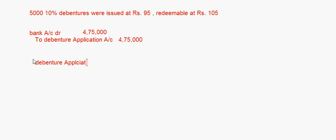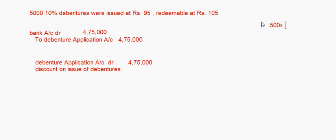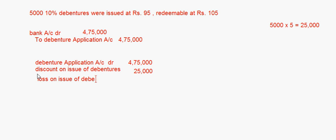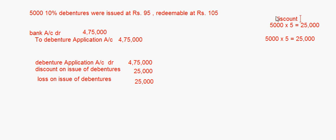Debenture application account debit — the same amount ₹4,75,000. Now let's do it step by step. Discount on issue of debentures: it is ₹5 per debenture, so 5,000 into 5 is ₹25,000. Now the next one is loss on issue of debentures — this is with the premium on redemption. Premium on redemption: redeemable at ₹105, that is again ₹5 premium, so 5,000 into 5 is again ₹25,000.